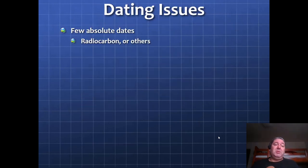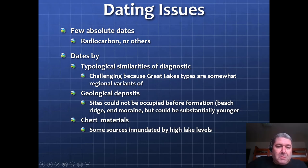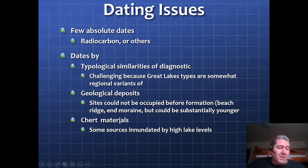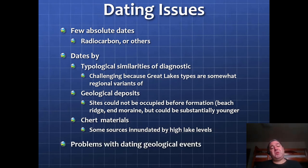Some issues with dating these remains: first, there are few absolute radiocarbon dates from around the Great Lakes, so we have to date by typology — a set of artifacts that links itself to a certain time period. This can be challenging because the tools and artifacts found here are a regional variant of others we see elsewhere. There are also geological deposit issues — sites could not be occupied before their formation, such as beach ridges and moraines. Chert material sources have now been inundated by high lake levels, but we can trace chert sources back to certain cultures. There's also a problem with dating geological events because we don't have great carbon dates for everything.